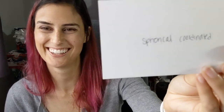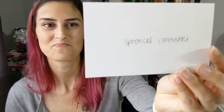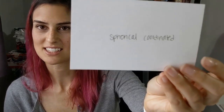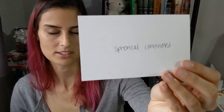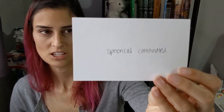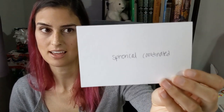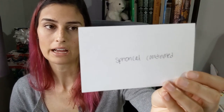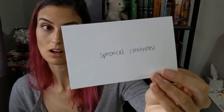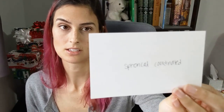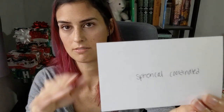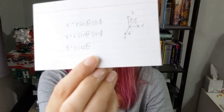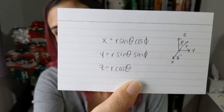Spherical coordinates — always good to remember. The Cartesian coordinates expressed in spherical: x equals r sine theta cosine phi, y equals r sine theta sine phi, and z equals r cosine theta. The convention used here is that theta is measured down from the z-axis and phi is the azimuthal angle — there's a little drawing to help remember that.